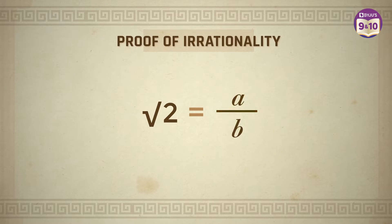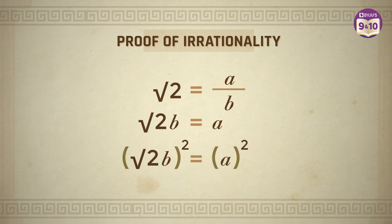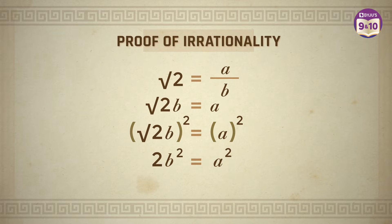So root 2 equals a by b. This implies root 2b equals a. Now on squaring both sides, we get 2b square equals a square.